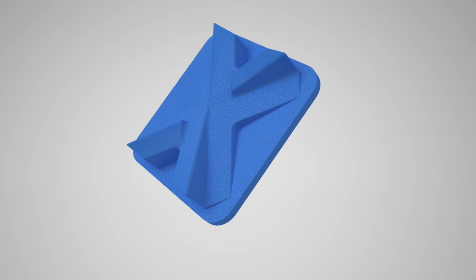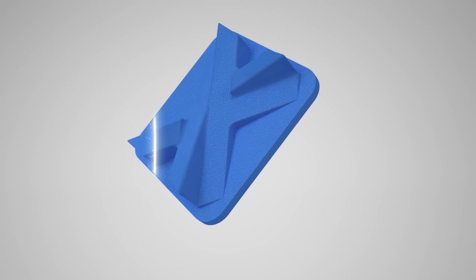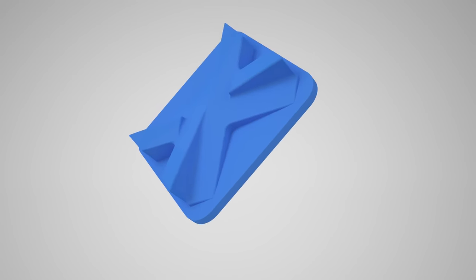SLS printed parts come out grainy. If necessary, they can be post-processed using vapor smoothing and media tumbling, for example.